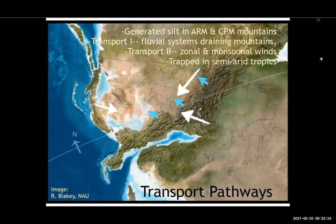Looking at transport pathways, we had a big orogenic belt both on the east and the west. Material was generated in those mountains and transported off — the blue arrows show river systems draining the mountains — and then zonal and monsoonal winds, shown as white arrows coming from both east and west, ultimately trapped it in this big, nice trapping region of subsiding basins in the western US.